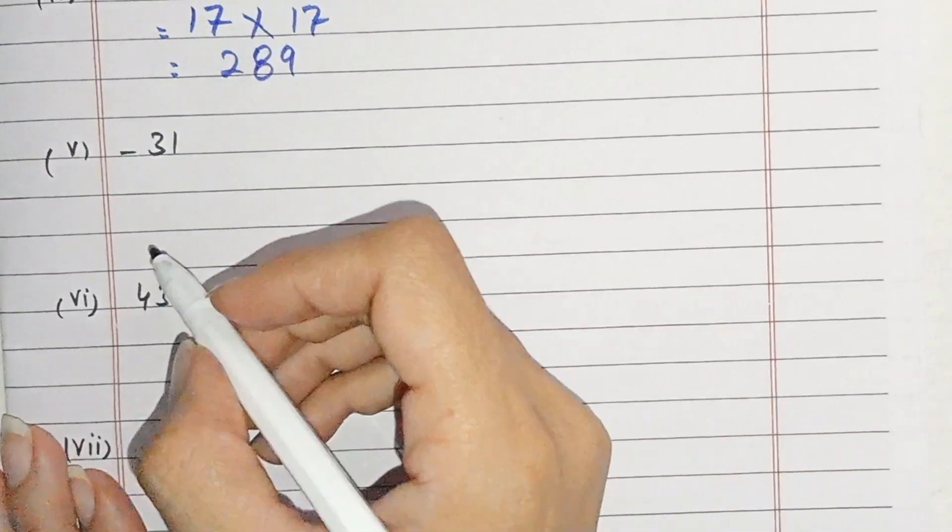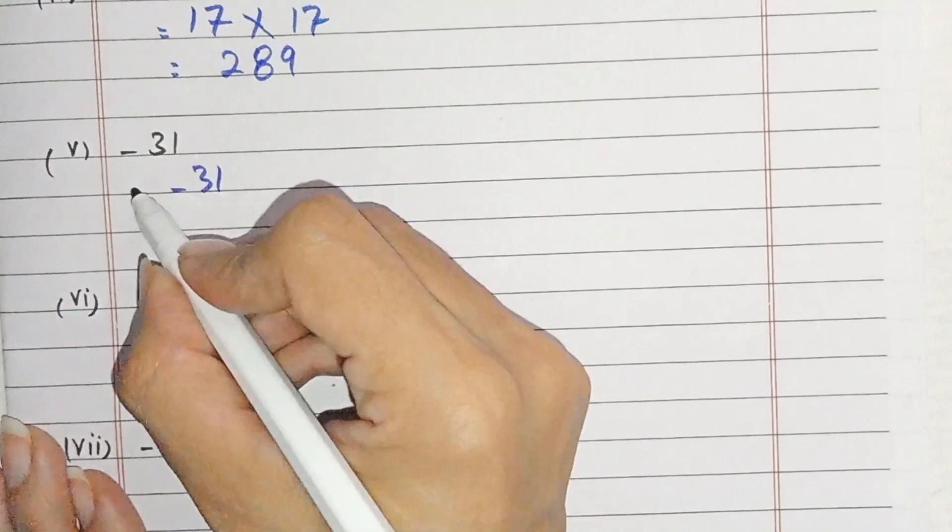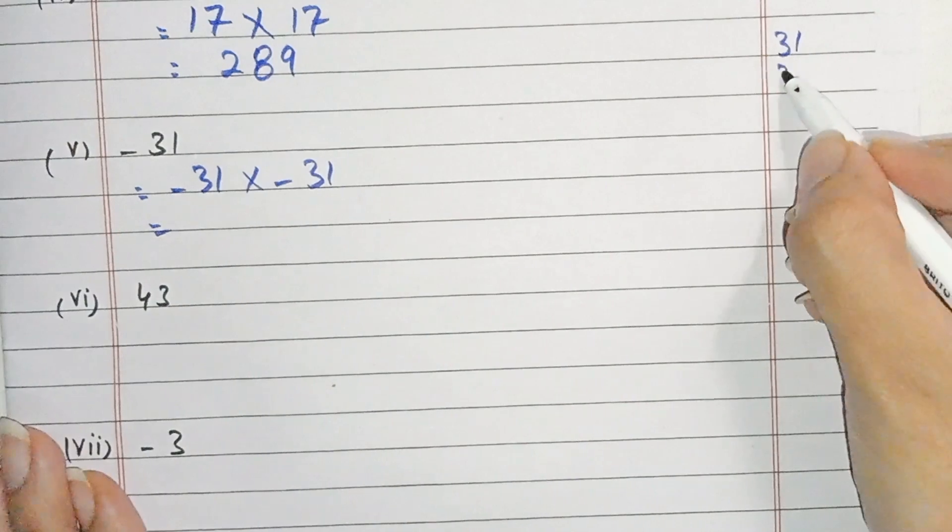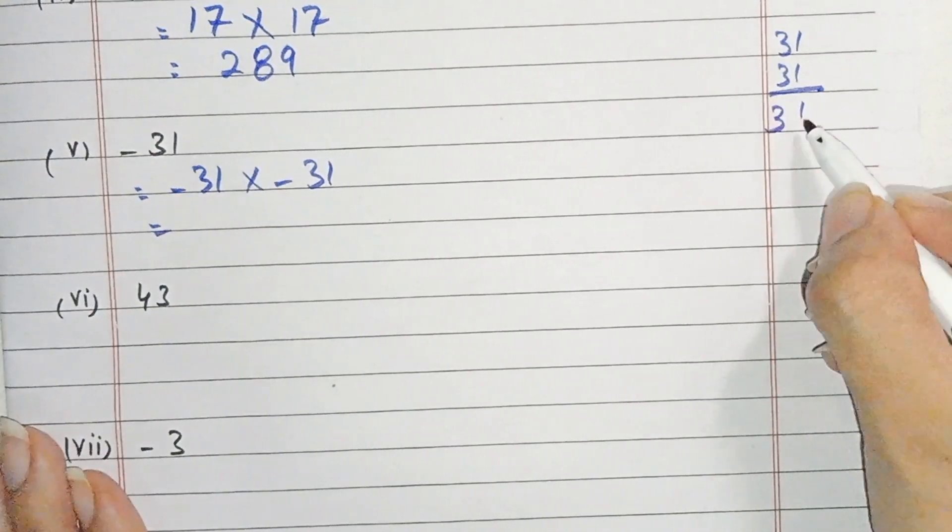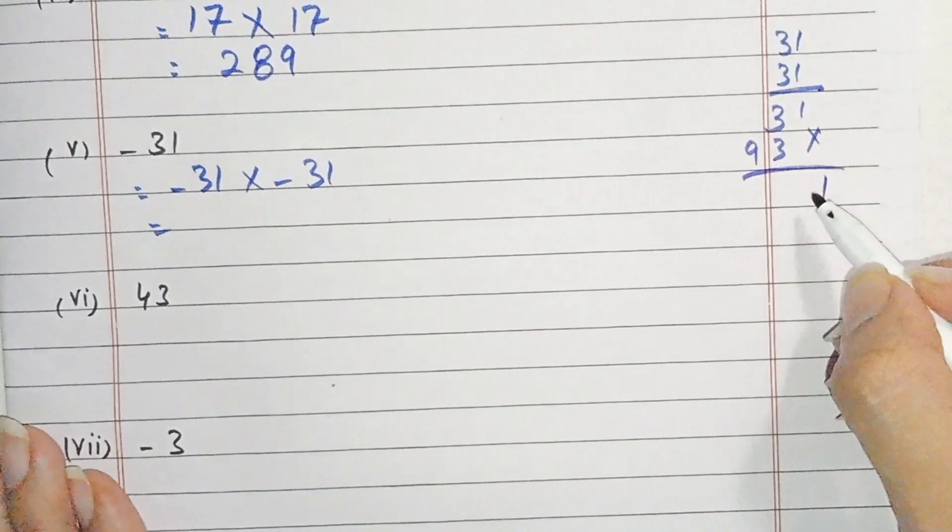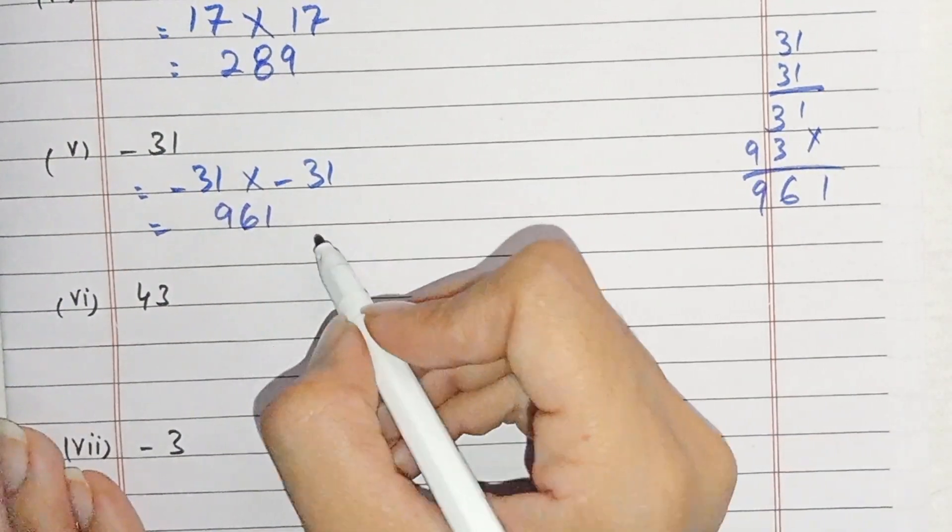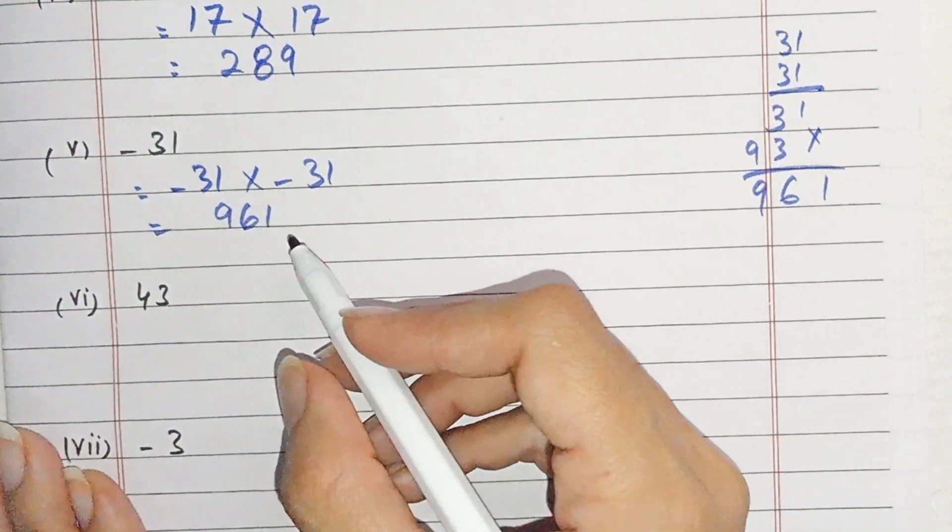Next students, part number 5, minus 31 multiply by minus 31. You have to multiply 31 by 31. 3 times 1 equals 3, 3 times 3 equals 9, so 169. We get 961. Negative times negative equals positive.